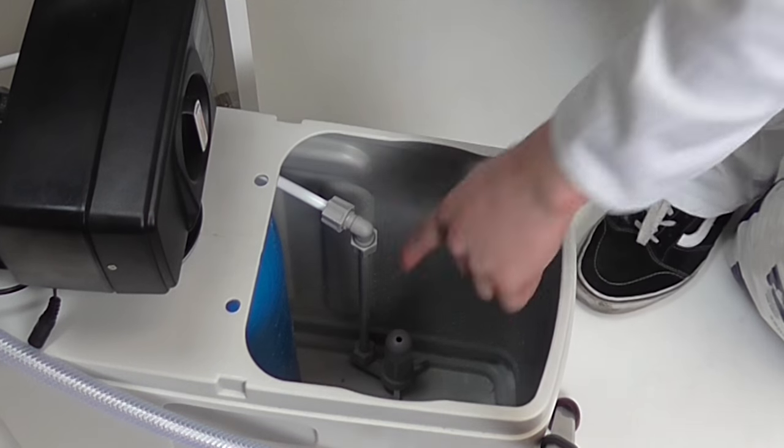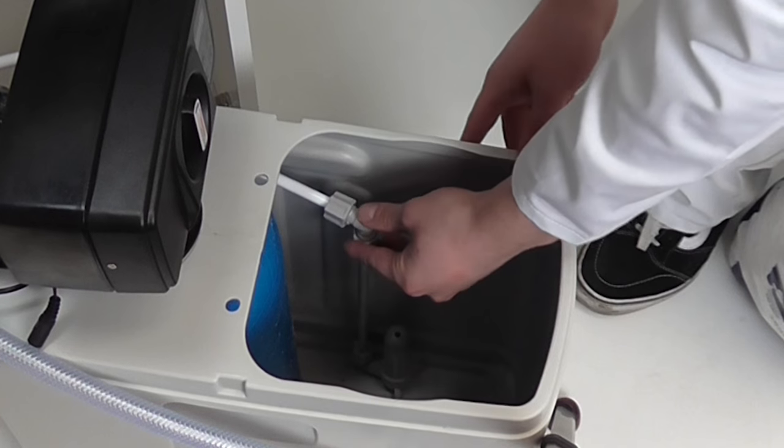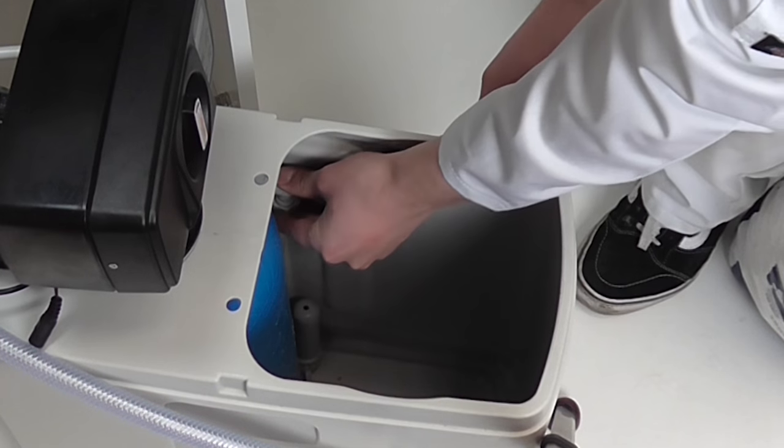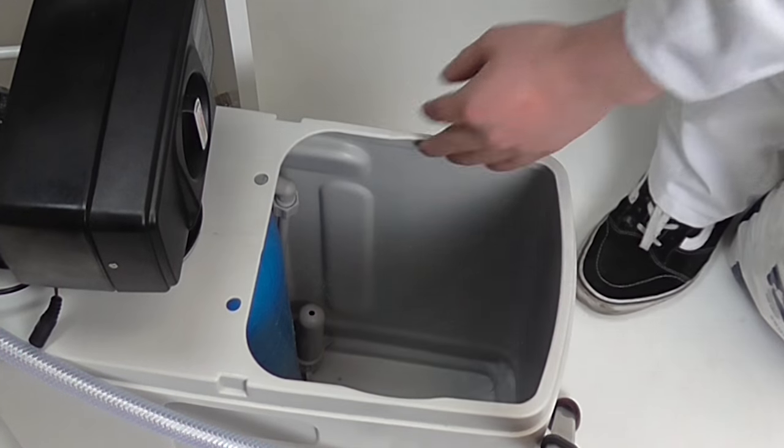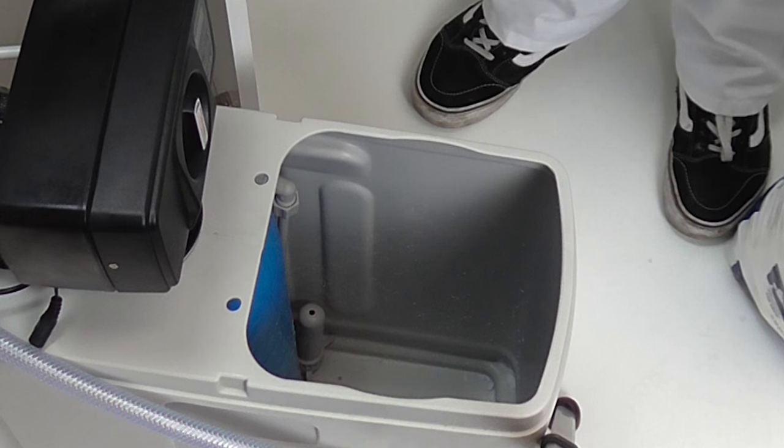The brine pipe should be positioned vertically inside the salt cabinet. The filter end should be on the floor of the cabinet and the other end up. For best results wedge the pipe at the side of the blue vessel so it does not move around.